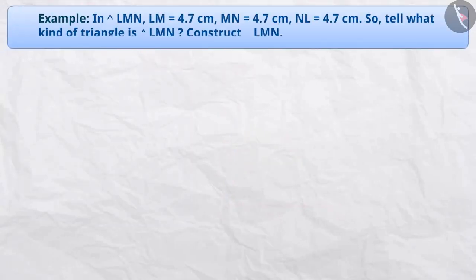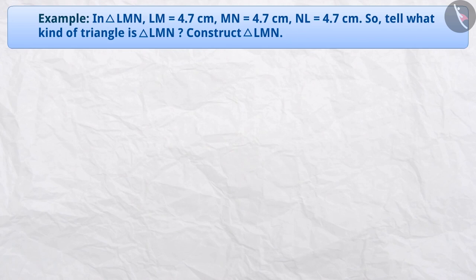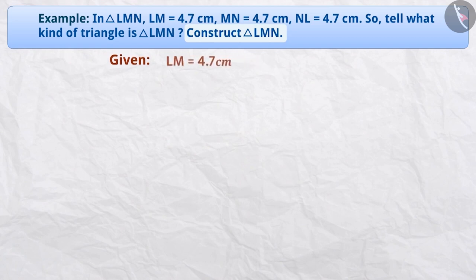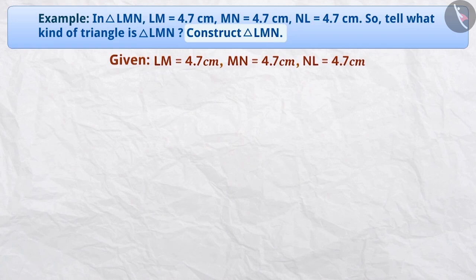Next example: In triangle LMN, LM is equal to 4.7 cm, MN is equal to 4.7 cm, and NL is equal to 4.7 cm. Can you tell what type of triangle is triangle LMN? Construct triangle LMN. Here, we have to construct triangle LMN with these three given side lengths.